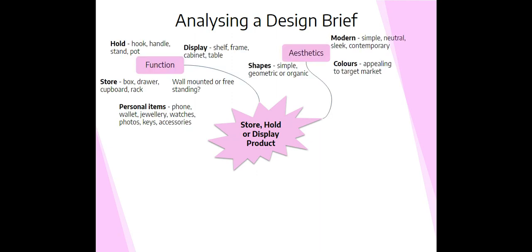Starting with function, you should consider the information from the brief which relates to what the product has to do — in this case, store, hold, or display are all important words to analyze. In the example you can see I've made suggestions for each function individually, and I've also thought about the personal items that should be stored, held, or displayed. Lastly, for function, I've considered how the product will do this — whether it should be wall-mounted or freestanding — as this will affect how the user interacts with the product.